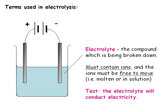The proper name for the ionic compound we're going to break down is the electrolyte. To be an electrolyte, the ions in the ionic substance must be free to move, not locked up in a giant ionic lattice. So we have to either melt the ionic substance or dissolve it in water before we can get an electrical current to pass through it. We can test to see whether a substance will act as an electrolyte by seeing whether we can pass electricity through it.